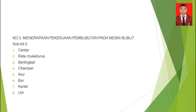Yang selanjutnya bubut chamfer — tujuannya melindungi sisa-sisa pembubutan rata sehingga tidak tajam. Selanjutnya bubut alur, meliputi alur segi empat dan alur setengah lingkaran. Selanjutnya bur, kemudian bubut kartel. Dan yang terpenting, bubut ulir — ulir terdiri dari ulir metrik dan Whitworth.